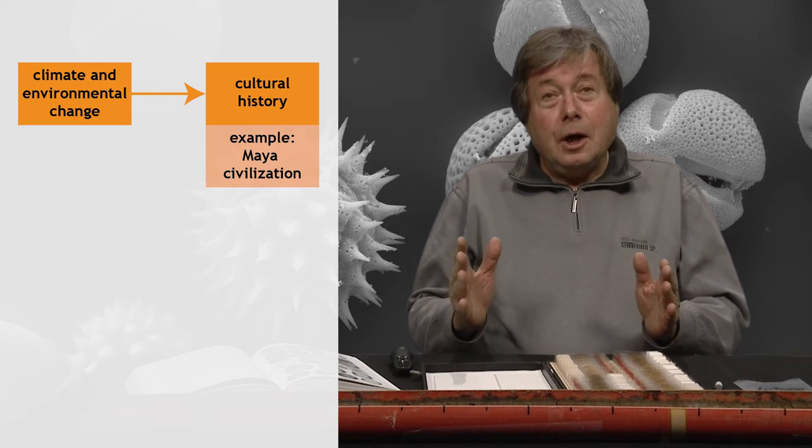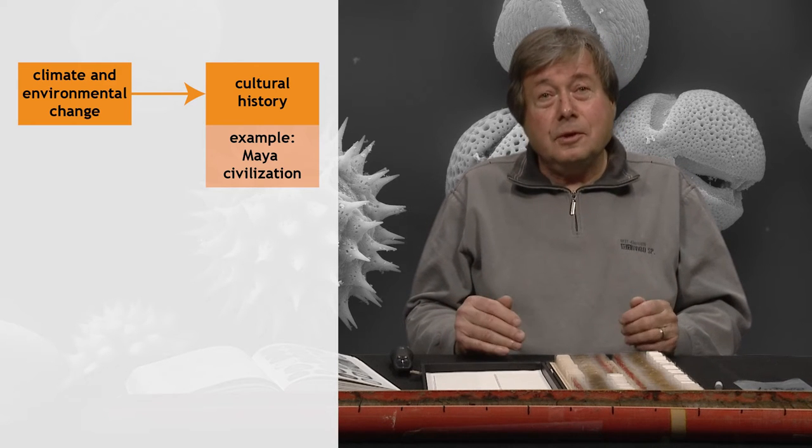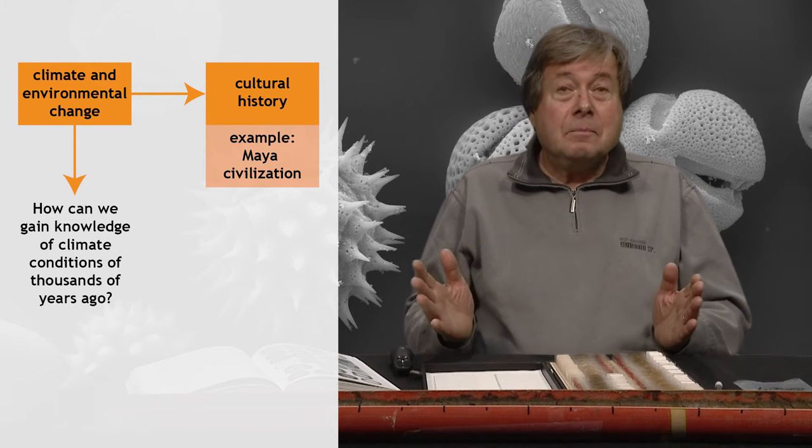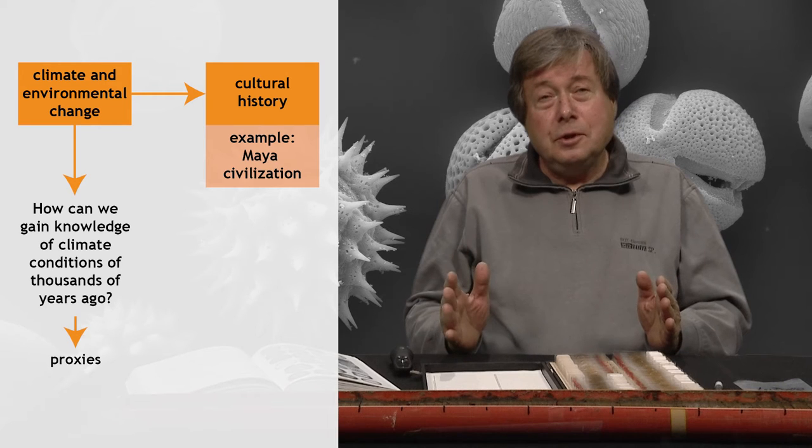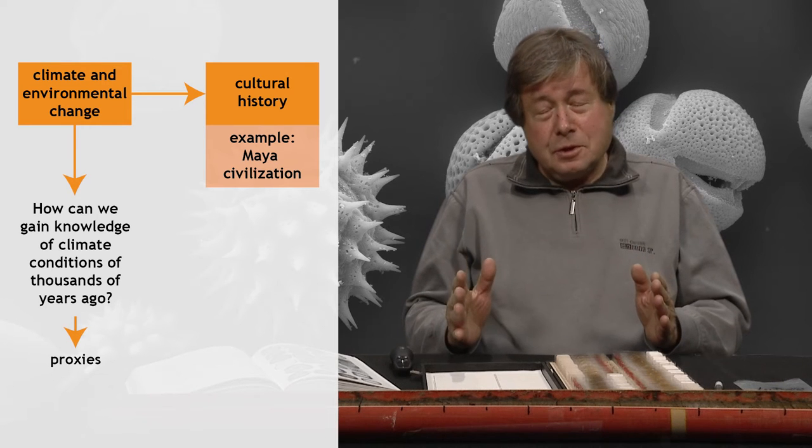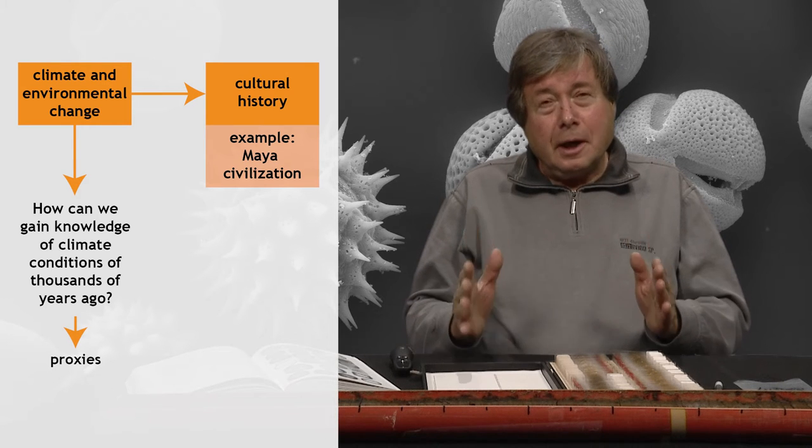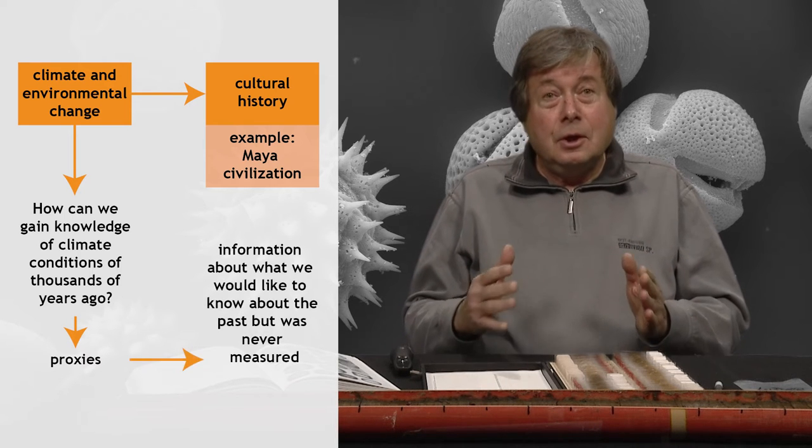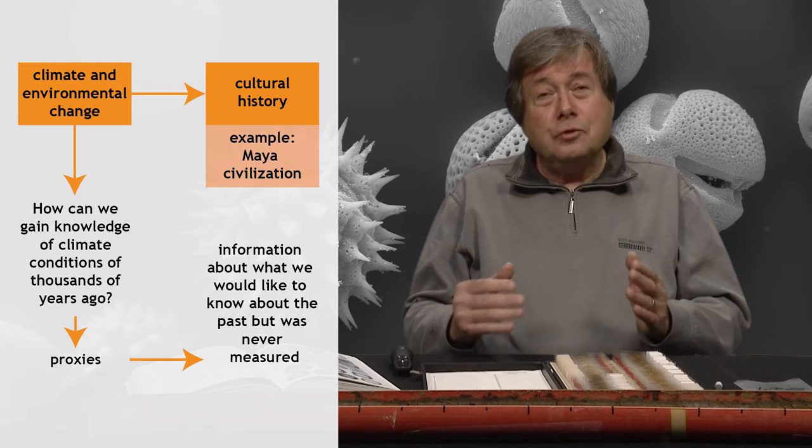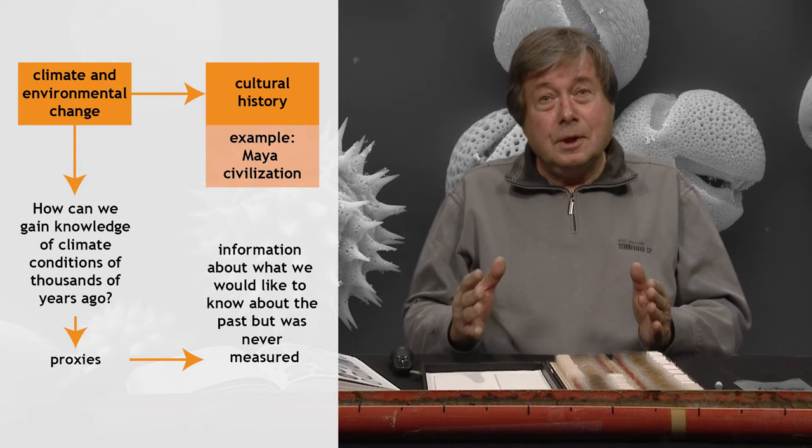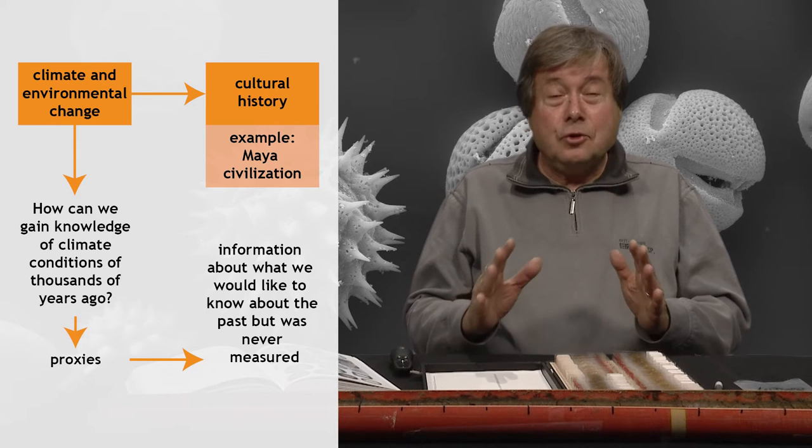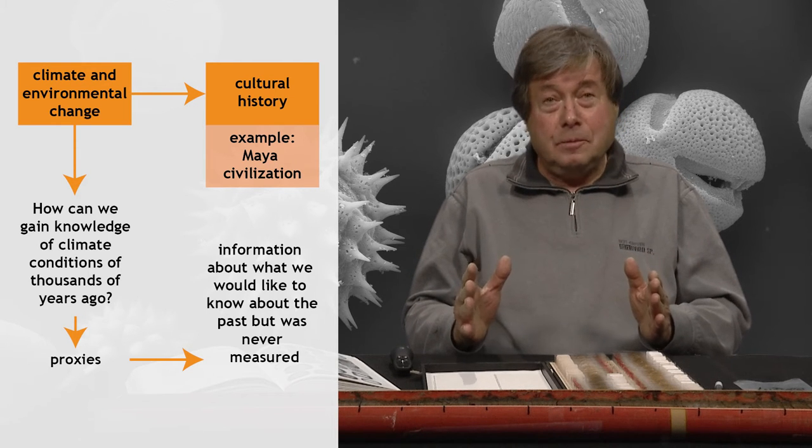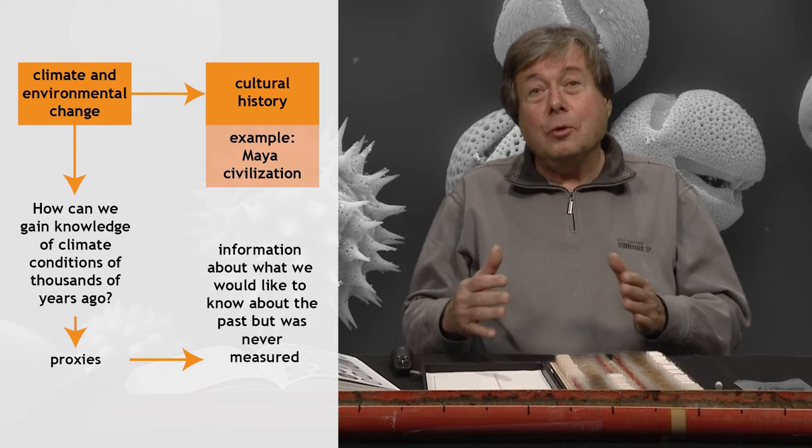The question now is, how can we gain knowledge of climate conditions of thousands of years ago? Well, we use proxies. And a proxy is information about what we'd like to know of the past, but what was never measured. So here we use the changing vegetation as an indicator of climate change. So in this case, vegetation change is our proxy and it has information on climate.